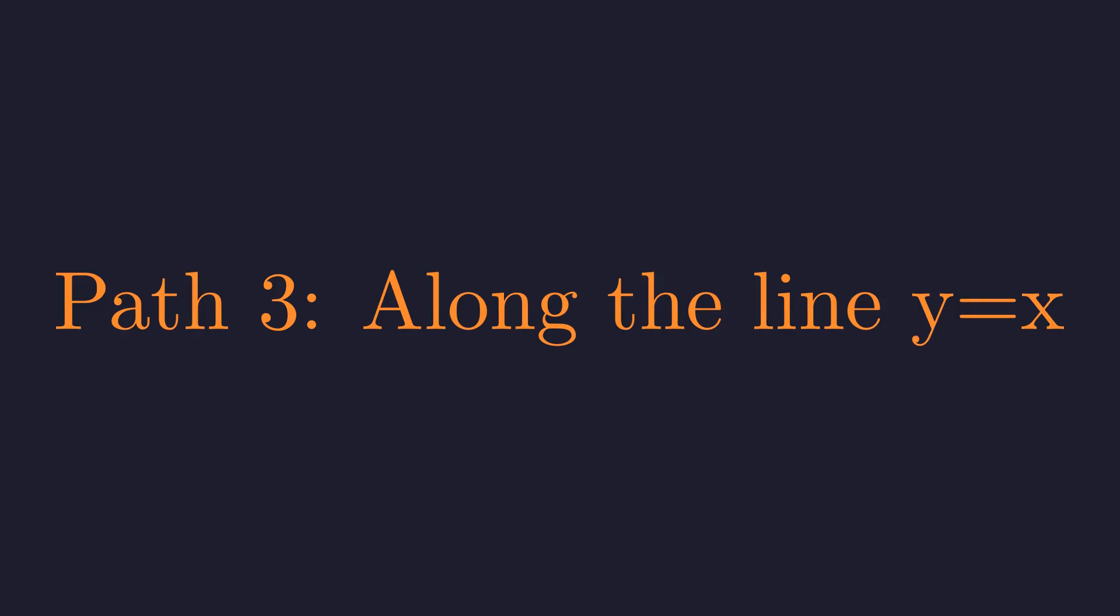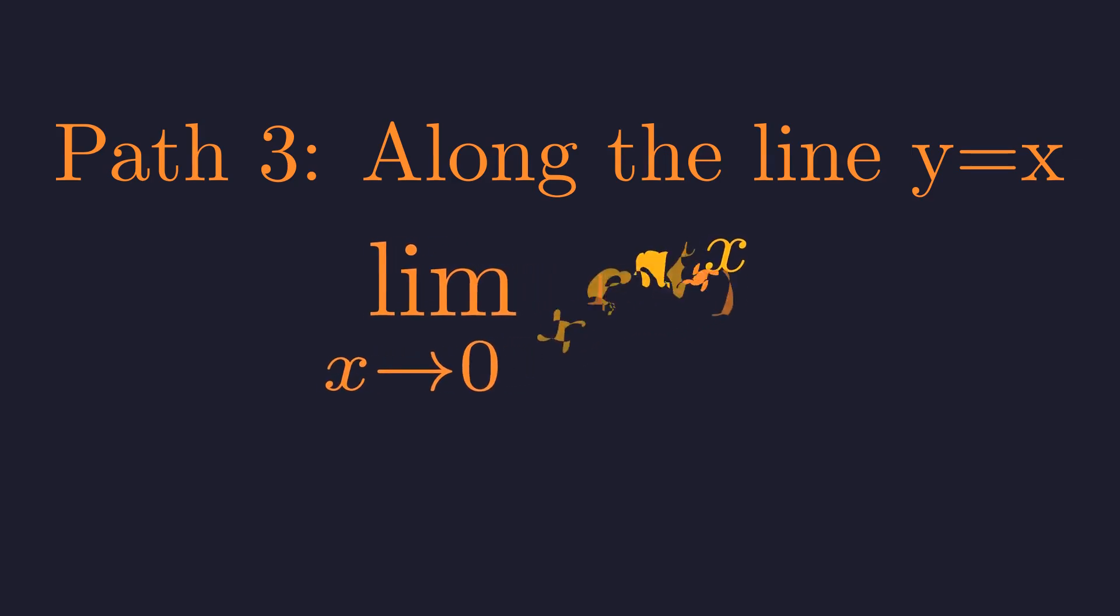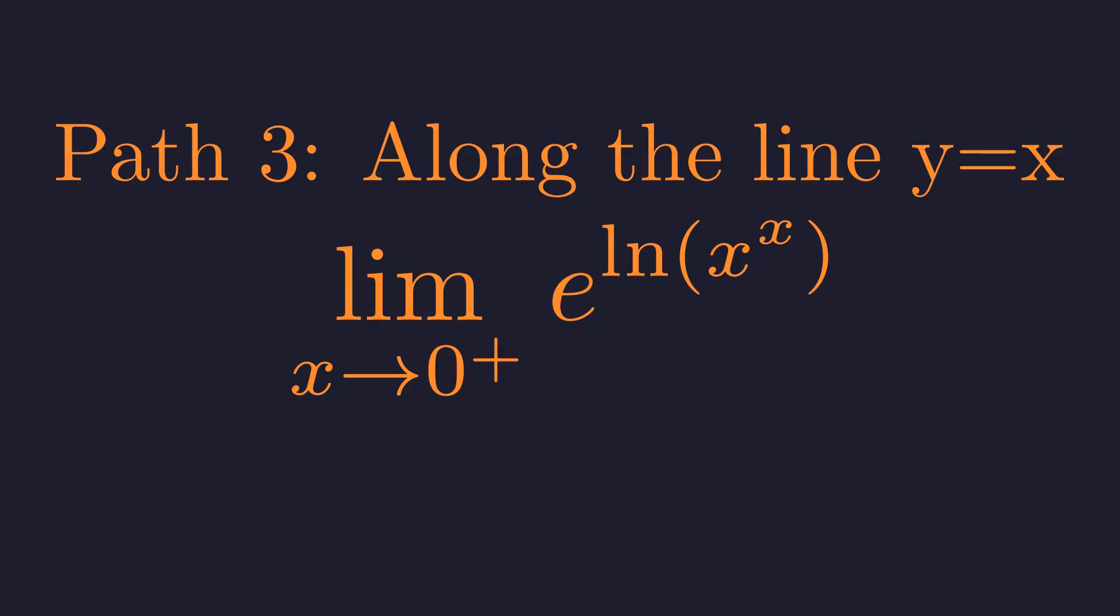To be thorough, let's test a third path: approaching the origin along the line where y equals x. This requires us to find the limit of x to the power of x as x approaches zero. This is a classic indeterminate form of the type zero to the power of zero. To solve this, we use a standard technique: rewriting the expression using the natural logarithm and exponential function. We can express x to the power of x as e raised to the power of the natural log of x to the power of x. Using the power rule for logarithms, we bring the exponent x down.